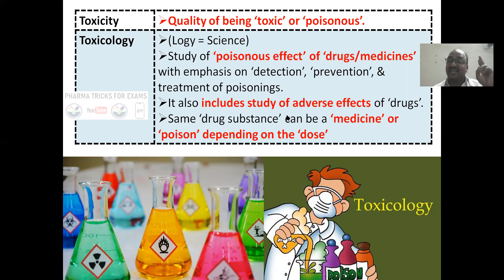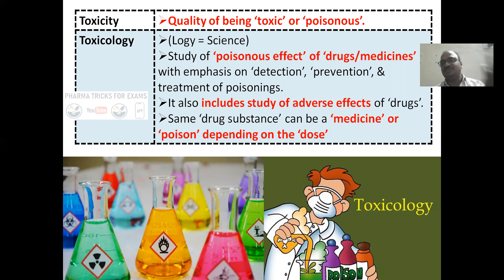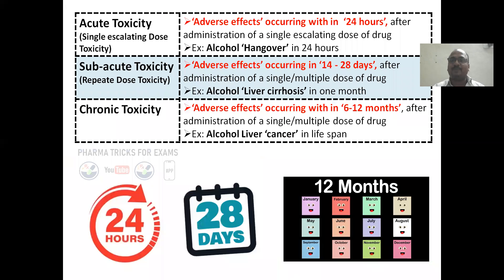Toxicology also includes the study of adverse effects. The same drug substances can be used as medicine, and the same substances can be used as a poison — it depends upon the dose. Paracetamol: taking 500 mg or 650 mg is fine, but double or triple the dose acts as a poison. Even water — taking 6 liters daily is good for health, but 20 liters per day makes water a poison too.